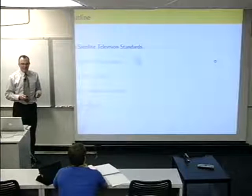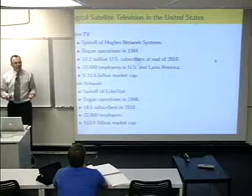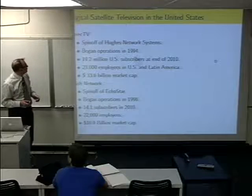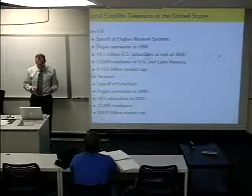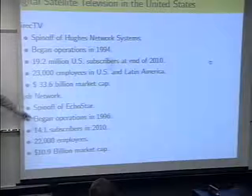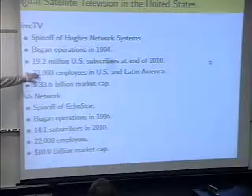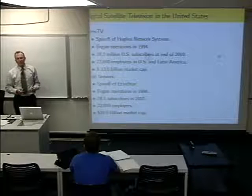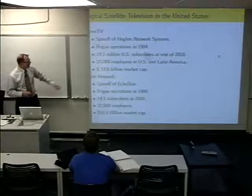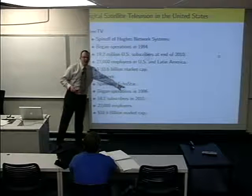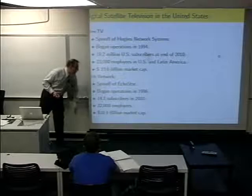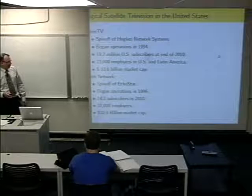A little background on the different standards. There are basically two satellite television providers in the United States: DirecTV and Dish Network. The thing I want you to get from this slide is that satellite television is a big business — between the two there's more than 30 million subscribers. In the case of Dish Network, they don't actually own their own satellites; another company called EchoStar owns the satellites, and Dish Network leases bandwidth from them.